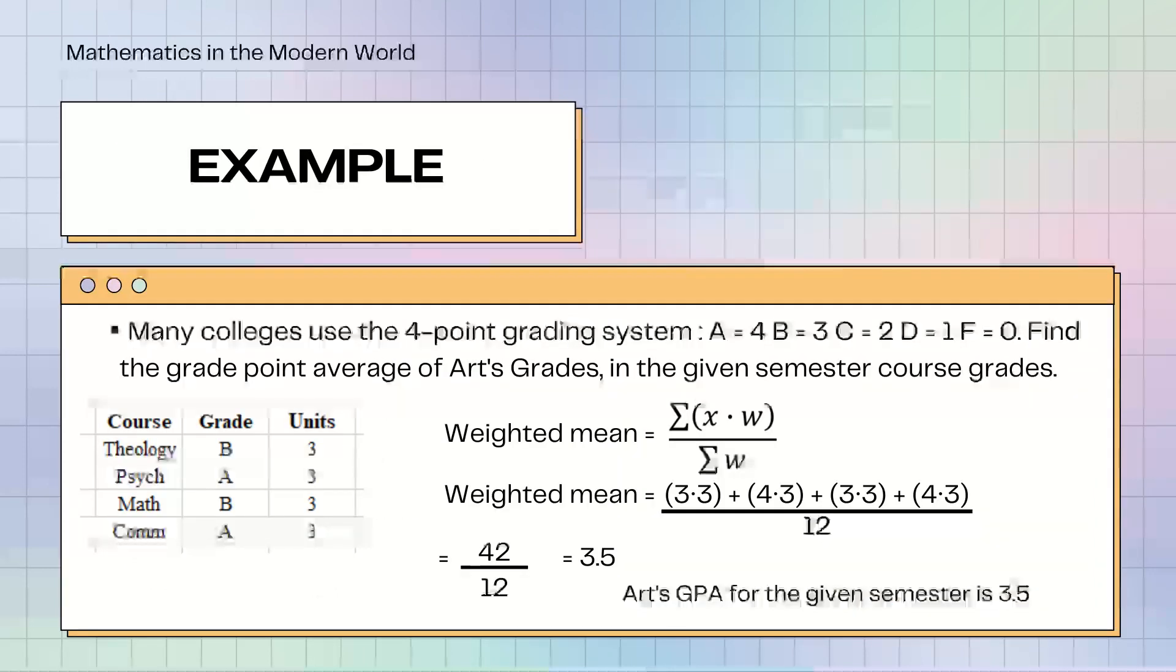Example for the weighted mean. Many colleges use the 4-point grading system. A is 4 points, B is 3 points, C is 2 points, D is 1 point, F is 0 point. Find the grade point average of Art's grades in the given semester course grades. By using the formula of the weighted mean, we will compute his grades.